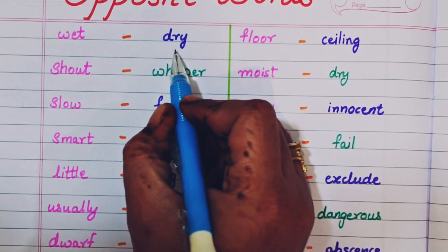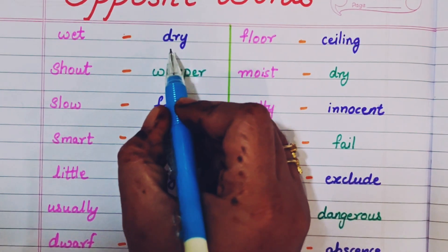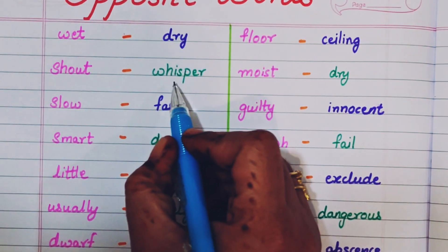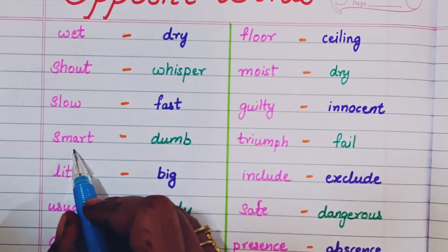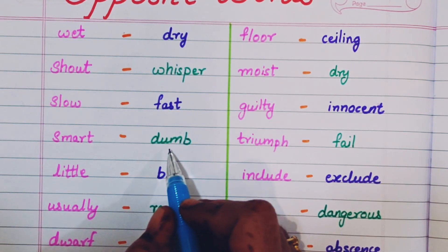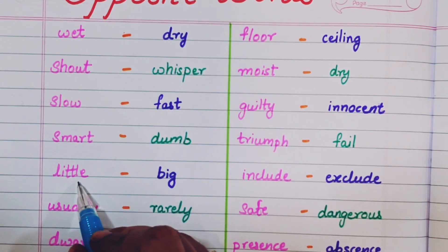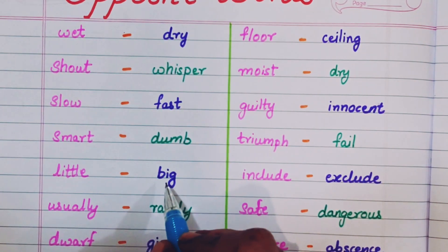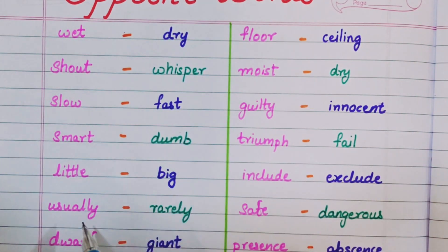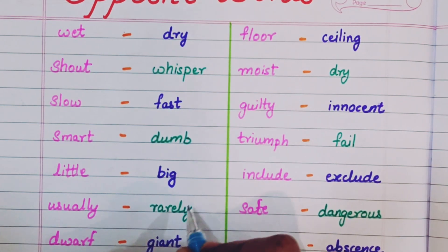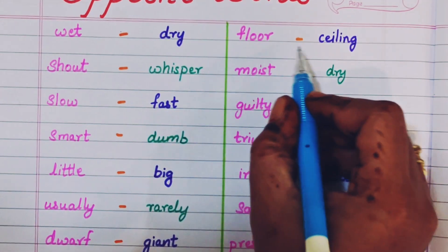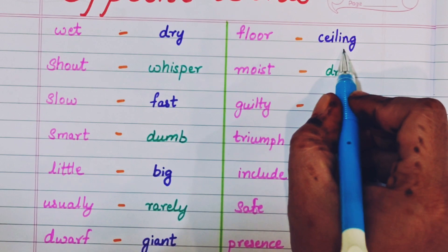Wet, dry. Shout, whisper. Slow, fast. Smart, dumb. Little, big. Usually, rarely. Floor, ceiling.